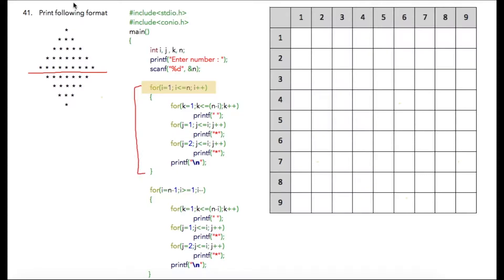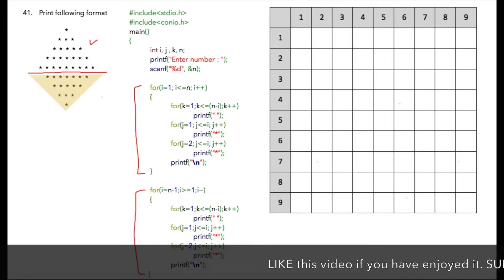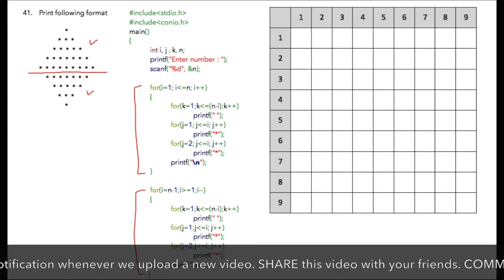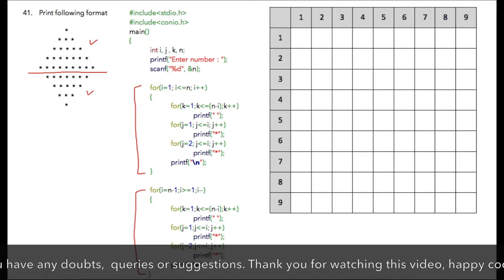This first for loop is to print this part, and the second for loop is for printing this part. I have already explained these two programs in detail in previous videos, so I strongly encourage you to try this program by yourself so that you get a clear understanding of pattern programming. The only important thing to notice here is...